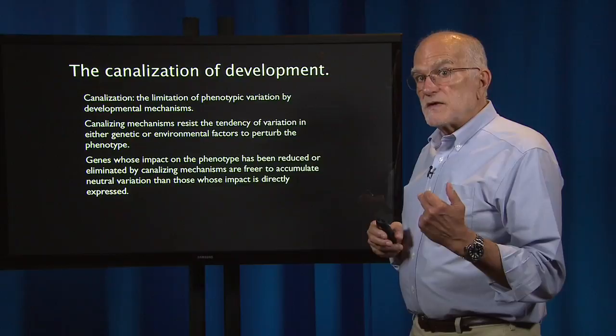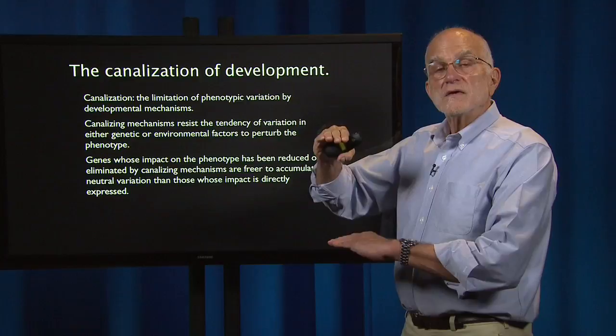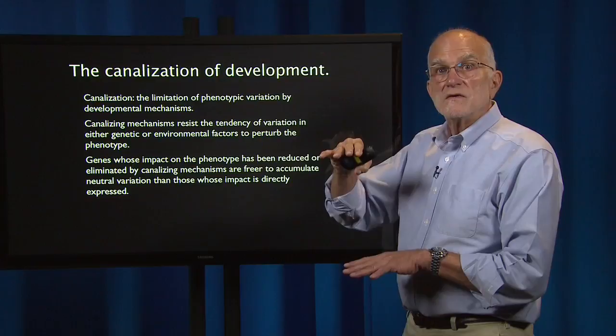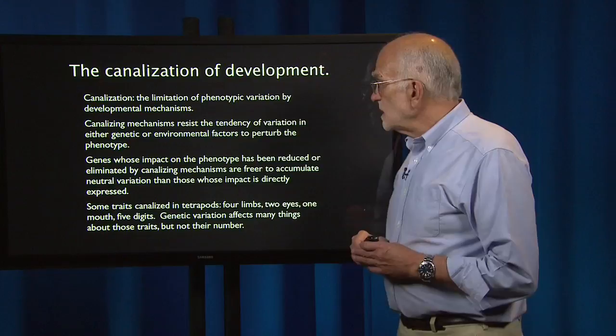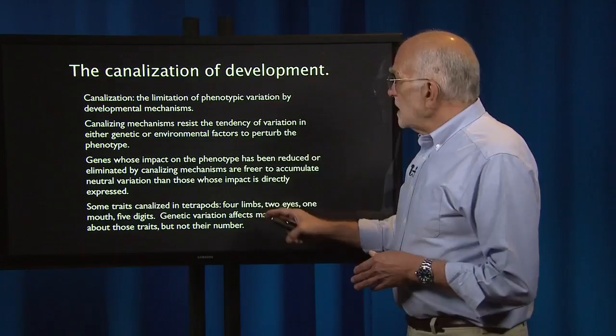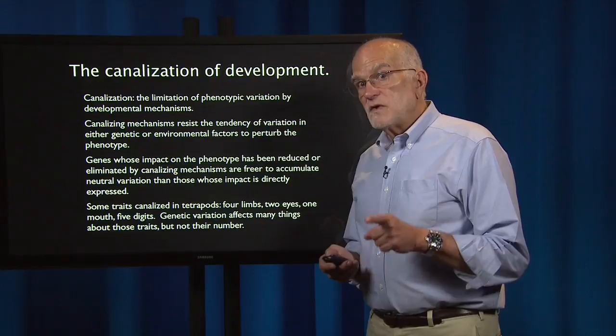If development sits between the genes and the phenotype, buffering the impact of genotypic variation on phenotypic variation, then the genotype is actually freer to vary and can accumulate more mutations. Some traits that are canalized in tetrapods include four limbs, two eyes, one mouth, and five digits. Genetic variation affects many things about these traits, but it does not affect their number — their number is canalized.